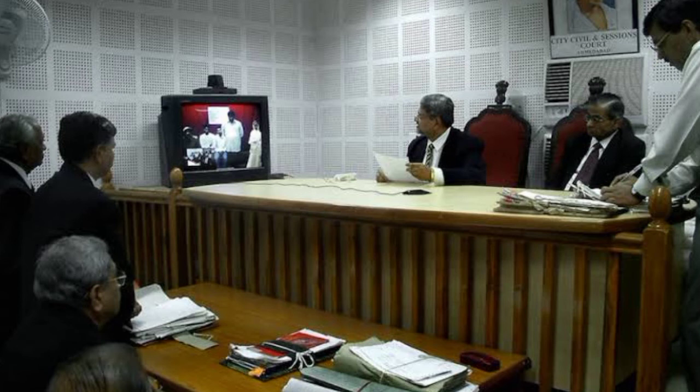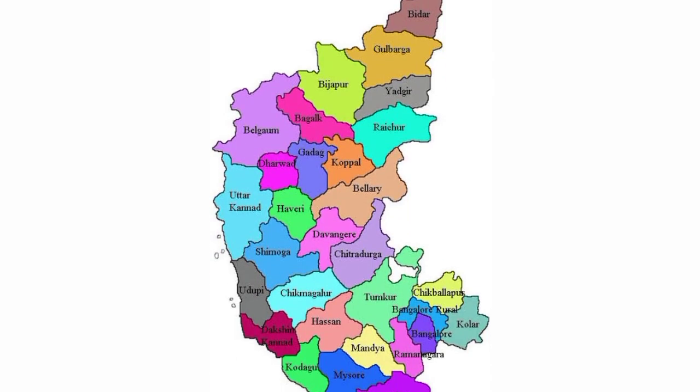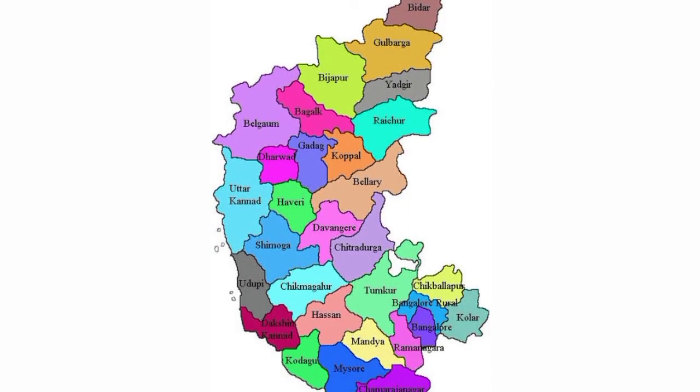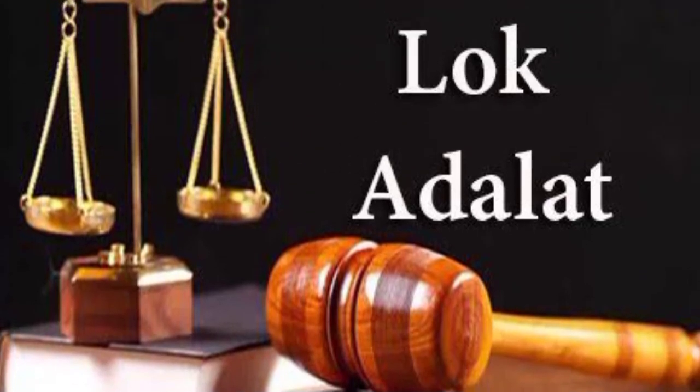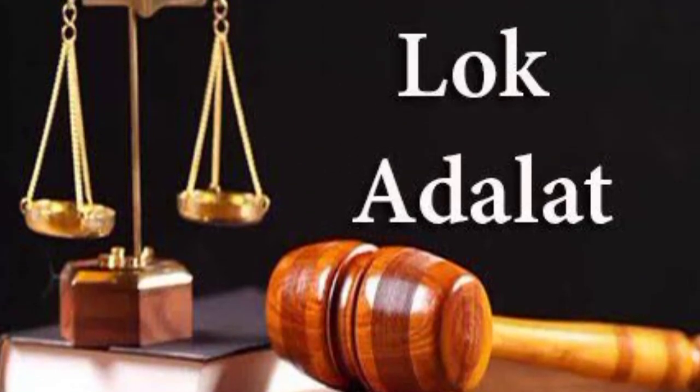Karnataka is divided into four divisions for administrative purposes: Bengaluru, Mysuru, Kalaburgi, and Belagavi.